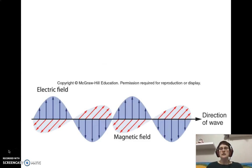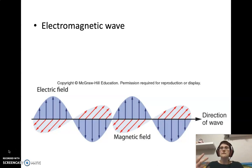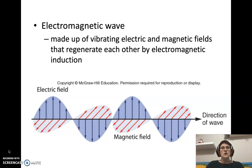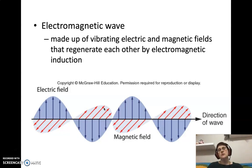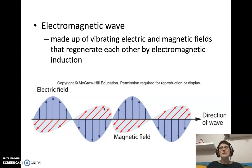This is what an electromagnetic wave looks like. When you get an electric current moving, you get a magnetic field — and that's exactly what's happening here. You get vibrating electric and magnetic fields that regenerate each other, creating electromagnetic induction. A moving electric field creates a magnetic field, which reinforces the electric field, and they keep reinforcing each other as the wave travels — which is why we call them electromagnetic waves.